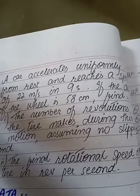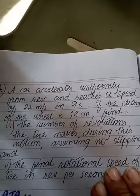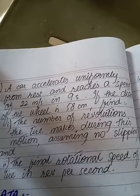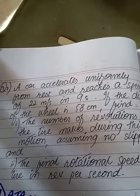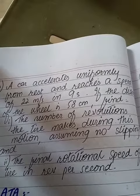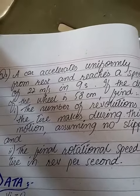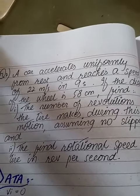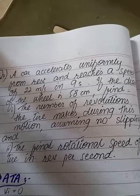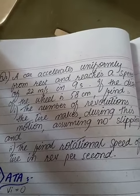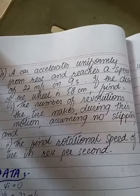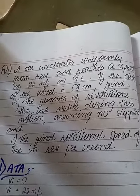A car accelerated uniformly from rest and reaches a speed of 22 meter per second in 9 seconds. If the diameter of the wheel is 58 centimeter, find the number of revolutions the tire makes during this motion, assuming no slipping.